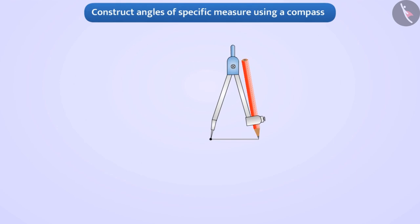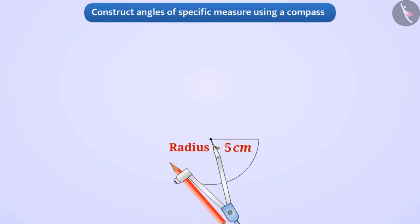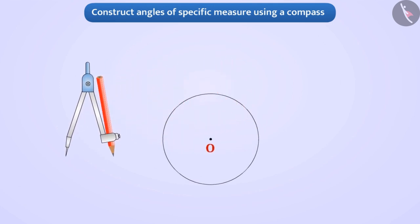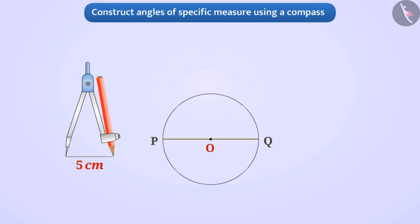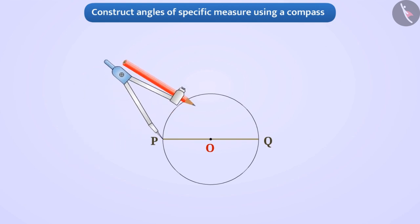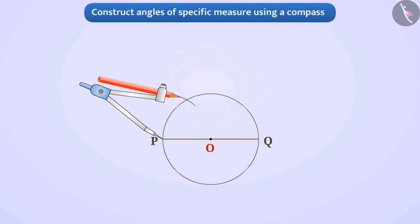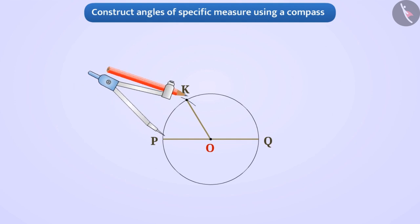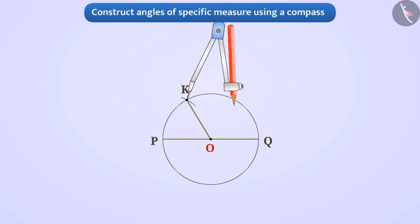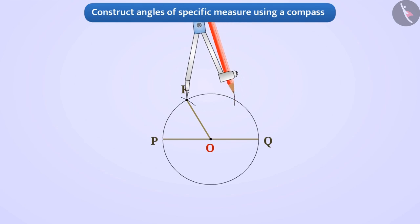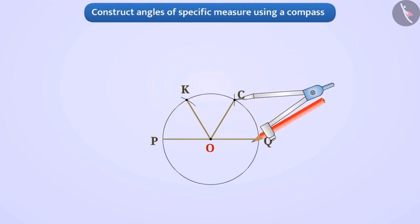Suppose we drew a circle of any radius with the help of a compass and named its centre O. Now we will draw diameter PQ on the circle. By keeping the distance taken in the compass, we will place the pointed end on P and mark an arc cutting the circle, naming the intersection point K. Then we will connect K to the centre O. By placing the pointed end at K, we mark another arc cutting the circle and name the intersecting point C. We then connect C to the centre O. If we place the pointed end on C and draw an arc, it will cut the circle at point Q only.